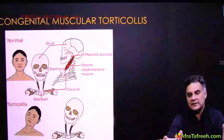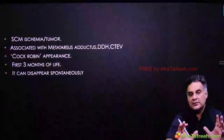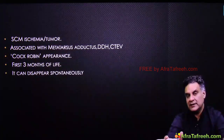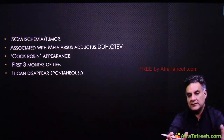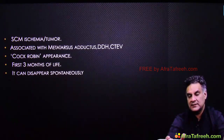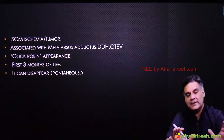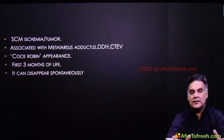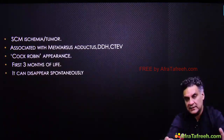Congenital muscular torticollis usually occurs due to ischemia of the muscle at birth. There can be a swelling inside the muscle. It is associated with TDA, CDH, and metatarsus adductus. The tilted appearance gives a cock-robin appearance. It can appear up till three months of life.